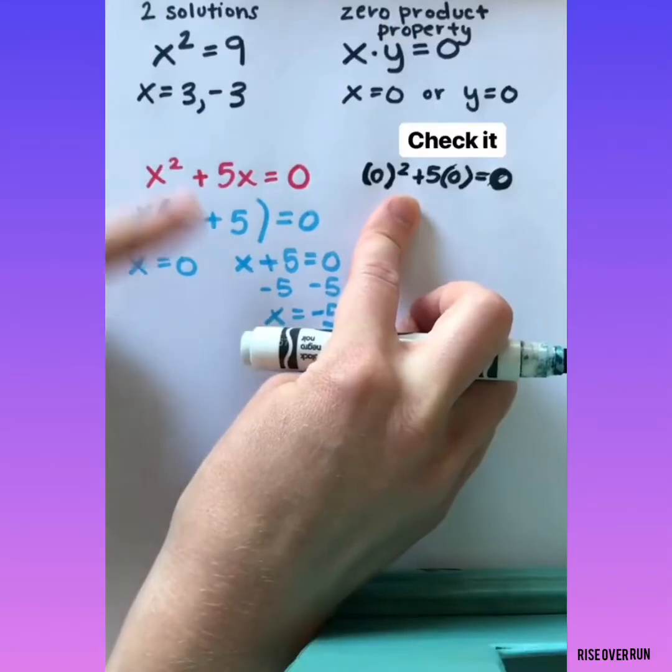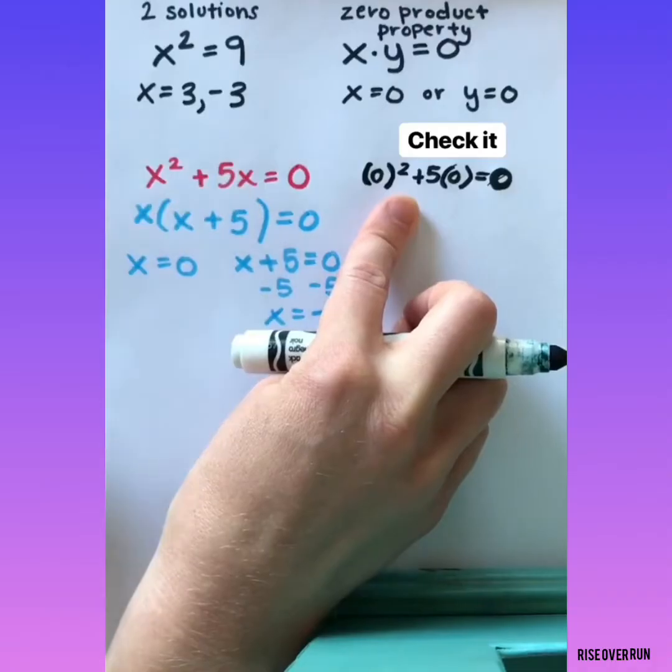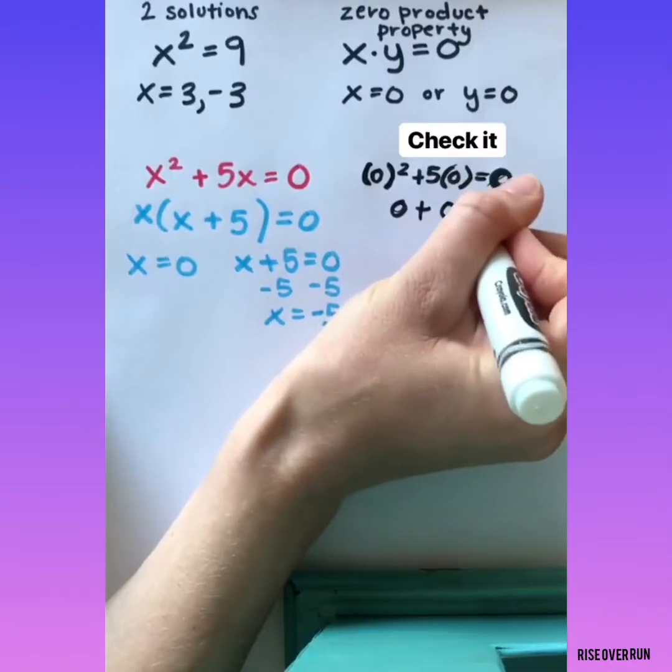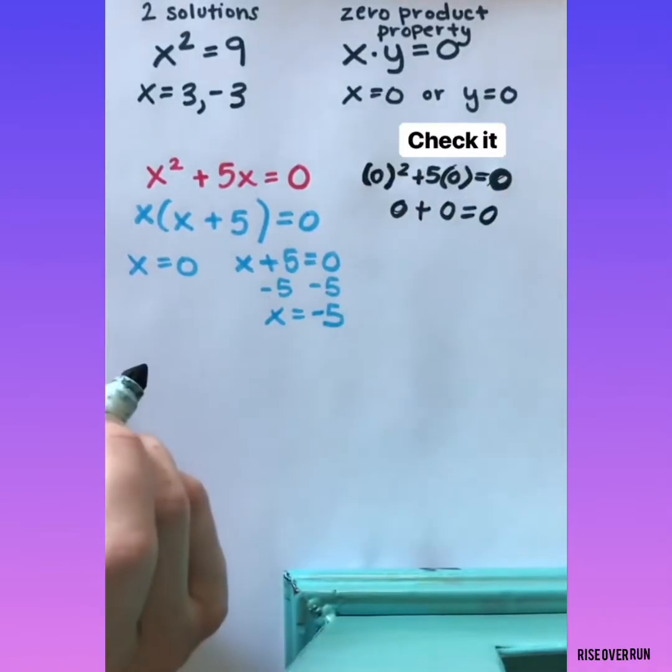Let's check our answers. If I plug a 0 in for both x's, 0 squared is 0, 5 times 0 is 0, and when I add those together, I get 0.